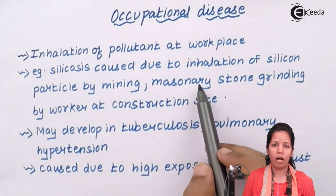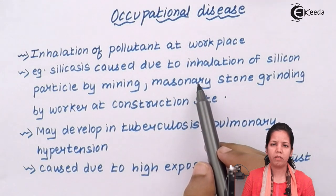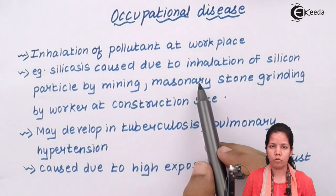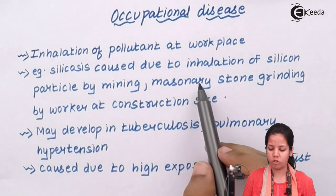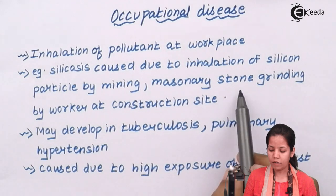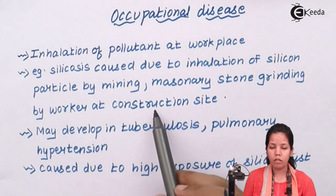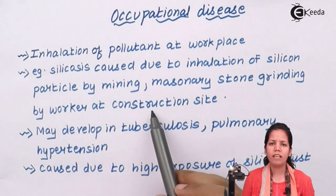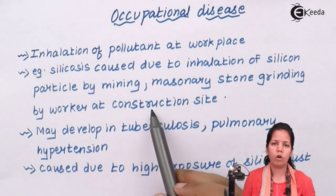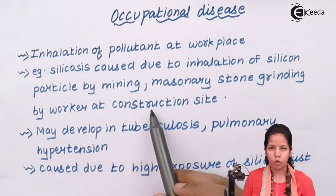Masons are the people who construct your houses, workplaces, and offices, and they are in continuous contact with brick, cement, and the mixture of brick and cement, which contains silicon compounds. Even paints have certain silicon compounds which give them their rich texture. Continuously stone grinding can also lead to uptake of silicon compounds, and workers at construction sites are continuously inhaling these silicon compounds, which leads to silicosis.